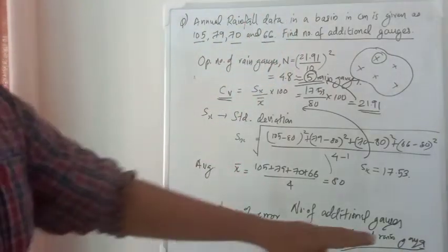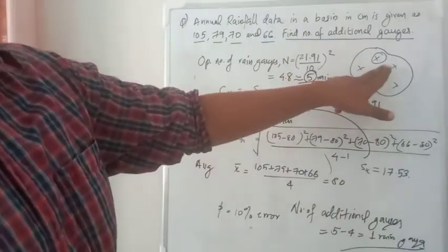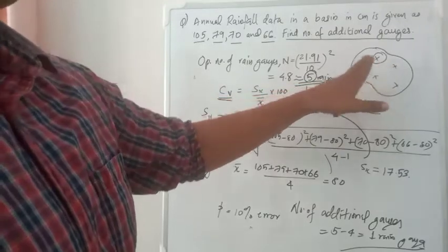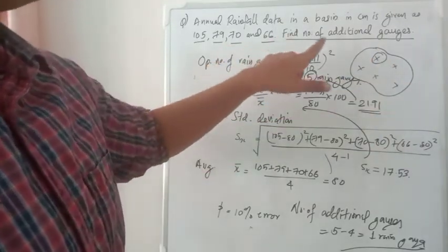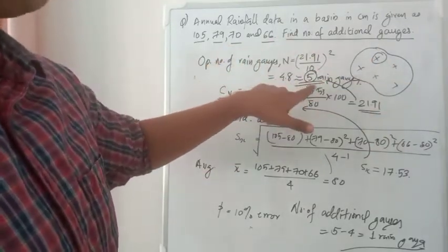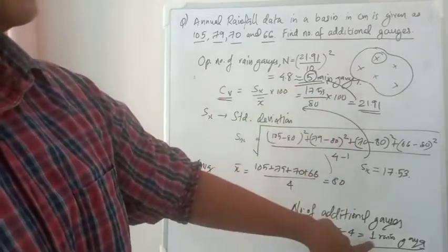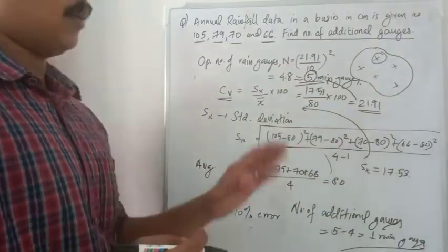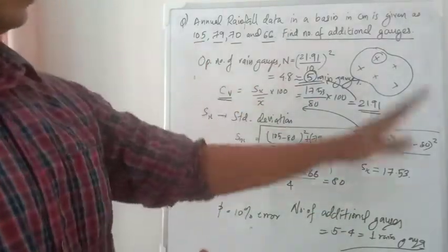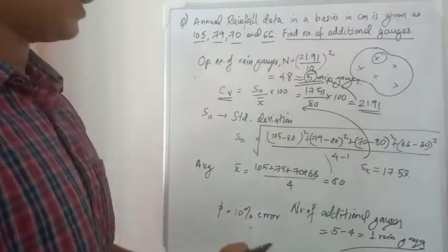So the answer is: we need to install one more rain gauge in the basin. There were four gauges, the optimum number is five, so we had to add one more rain gauge.